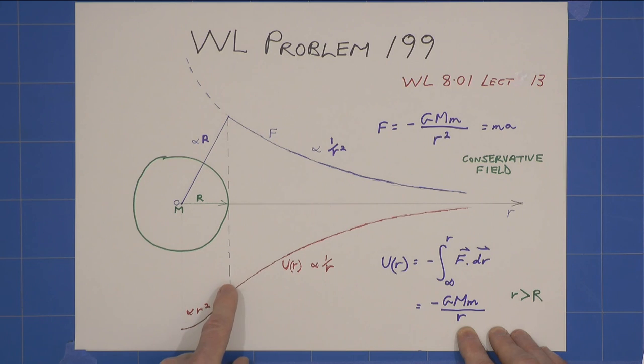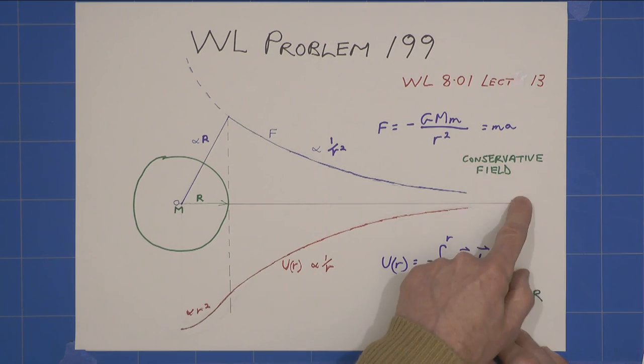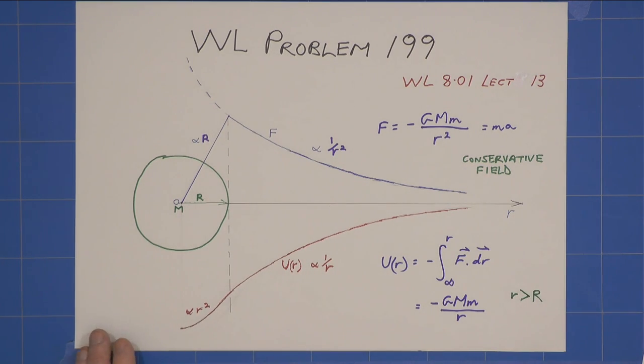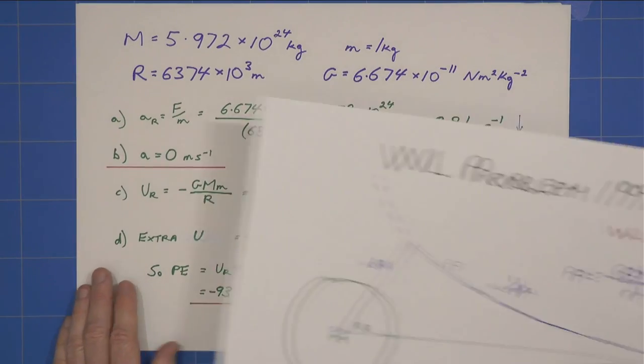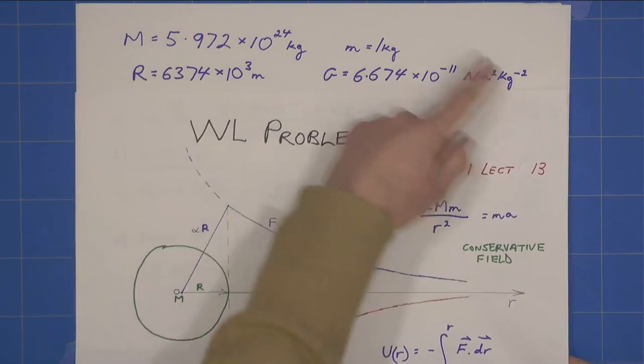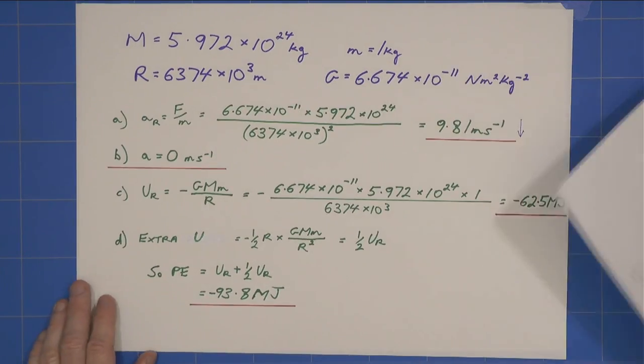And this is more negative than that, and that is more negative than out at infinity. And with that, we can do the problem. So now it's just a matter of, we're given these values, and we just plug the values in.